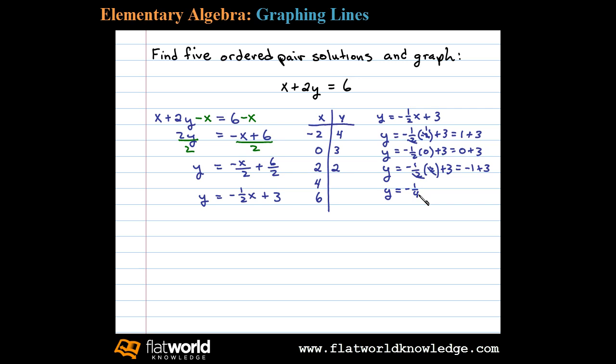Substituting in 4, negative 1 half times 4 is negative 2 plus 3, corresponding y value there is 1. And then finally substituting in 6, negative 1 half times 6 is negative 3 plus 3. Well that gives us 0.